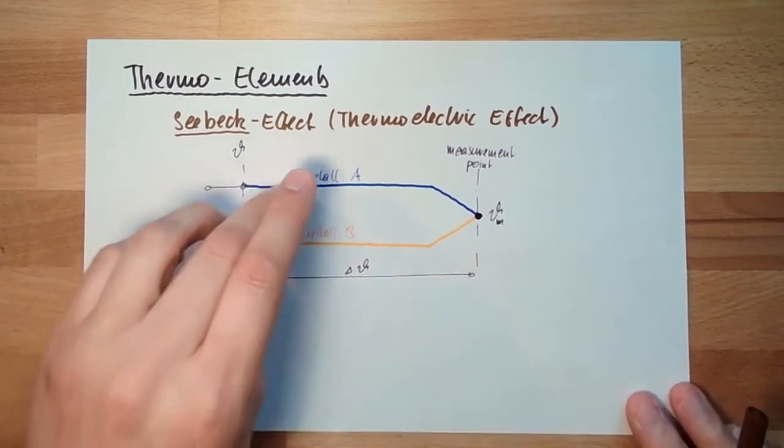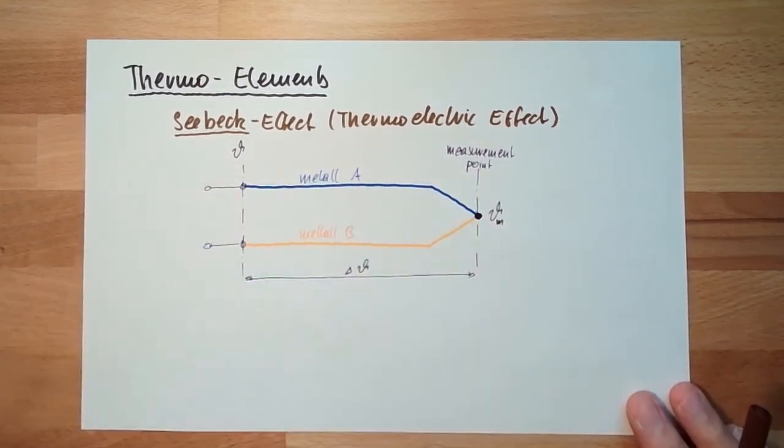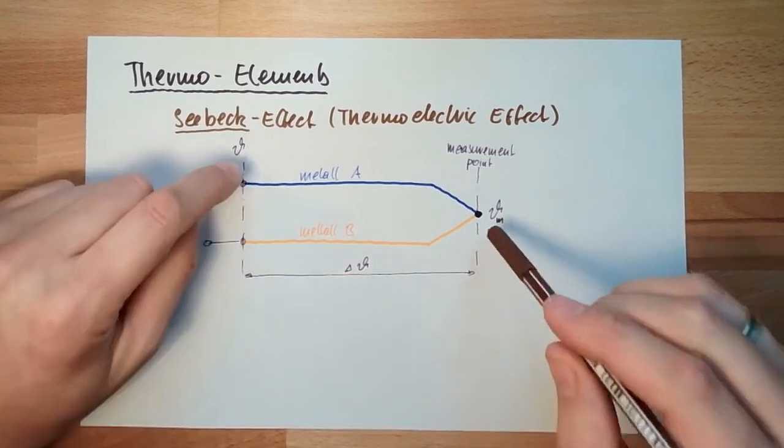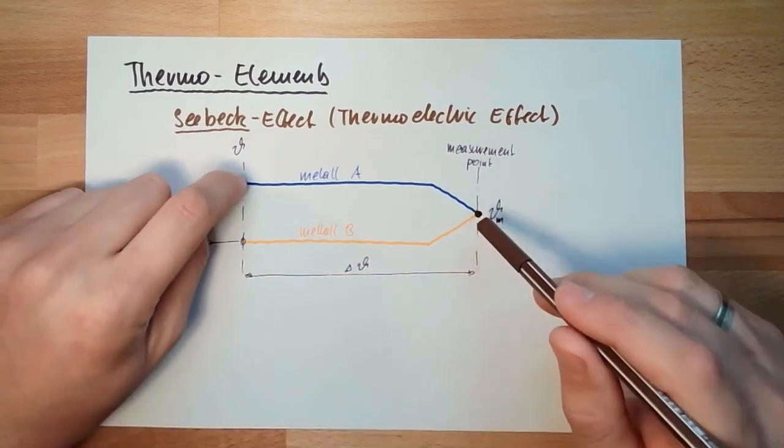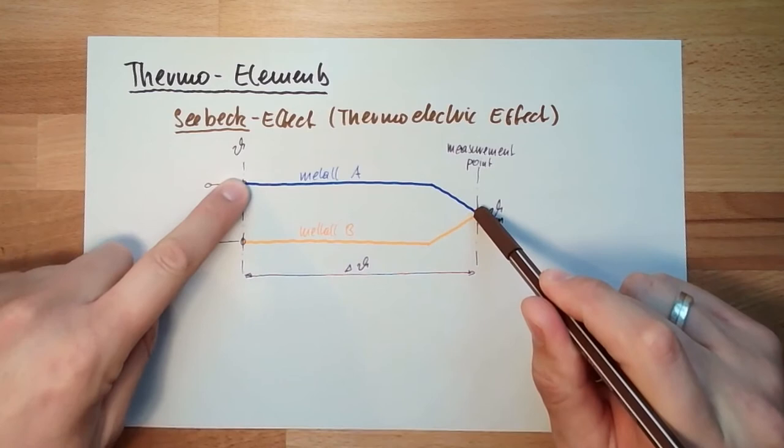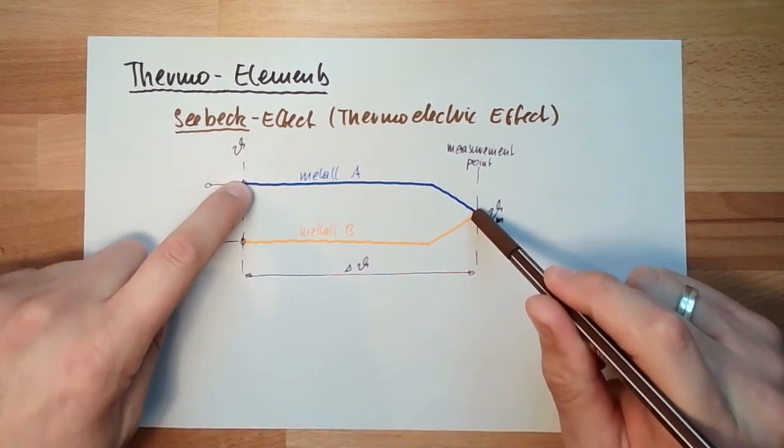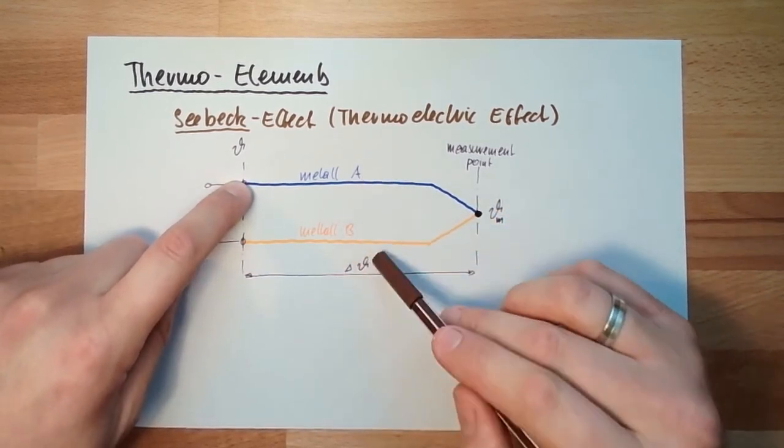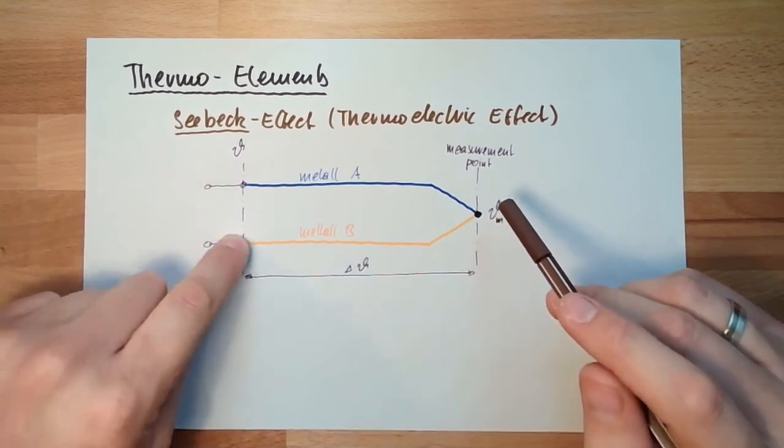If I have only one metal, I do not really realize this. A certain metal has a certain potential difference at a certain temperature difference. If these two metals are the same, I have here the same potential like here.